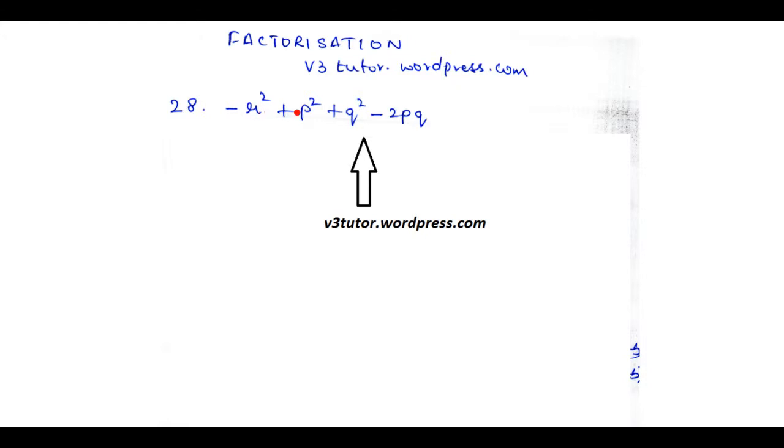But in this problem we find that there are no common terms between any of these three terms, so we cannot apply factorization by grouping. But there is an interesting observation here that P squared plus Q squared minus 2PQ gives you a hint that it may belong to some kind of an algebraic identity.